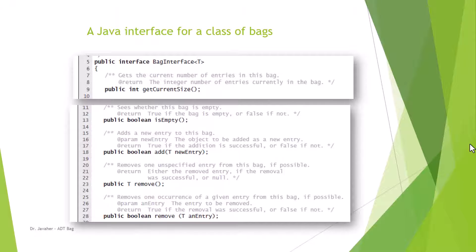This Java interface for class Bag is the translation of the UML diagram from the last slide. These methods show the operations that the bag can handle. The first one, public int getCurrentSize, checks for the number of entries in the bag. The second, boolean isEmpty, returns true if the bag is empty and false if not. The boolean add method adds a new entry and returns true if successful, false if not. The T remove method removes one unspecified entry from the bag. The boolean remove method removes one occurrence of a given entry and returns true if successful, false if not.